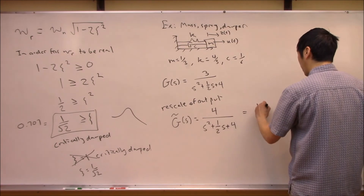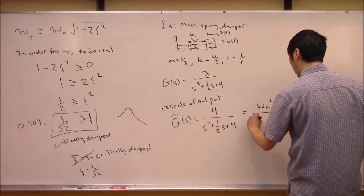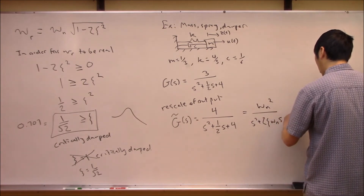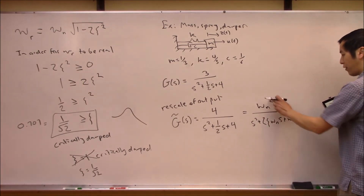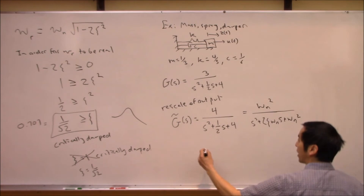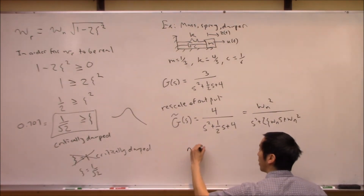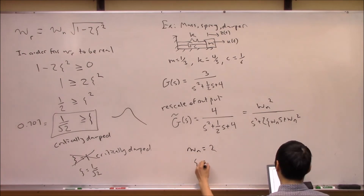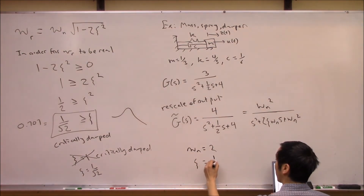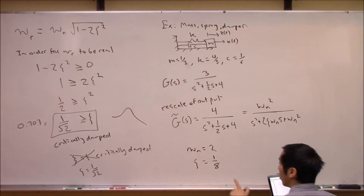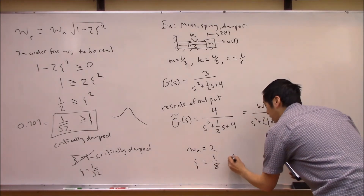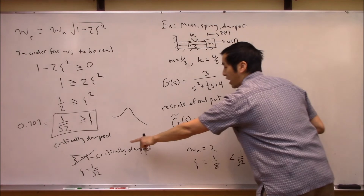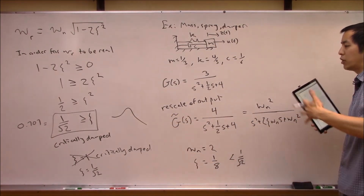Now solving for the damping ratio and natural frequency: writing the denominator in standard form ω_n² / (s² + 2ζω_n·s + ω_n²), we can see from inspection that ω_n = 2 rad/s. Back-solving for ζ gives a damping ratio of 1/8. This is clearly less than 1/√2, so our Bode plot should have a peak and we can solve for the resonant frequency.